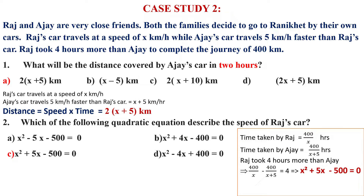Raj and Ajay are very close friends. Both families decide to go to Ranikhet by their own cars. Raj's car travels at a speed of x km per hour, while Ajay's car travels 5 km per hour faster than Raj's car. Raj took four hours more than Ajay to complete the journey of 400 km. Distance is given. Now the questions start from here based on this situation.